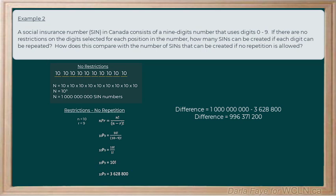So, the difference between that would be 996,371,200. That is a pretty significant difference in the number of SIN numbers that could be created.